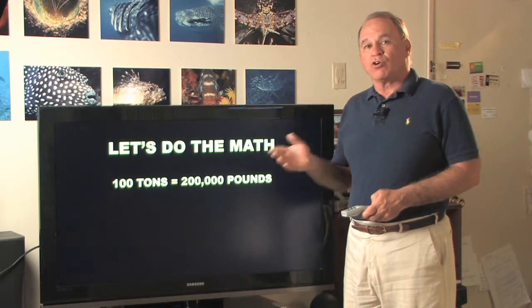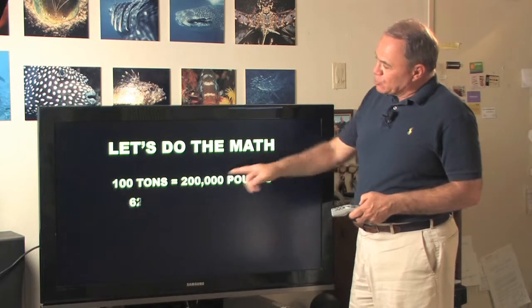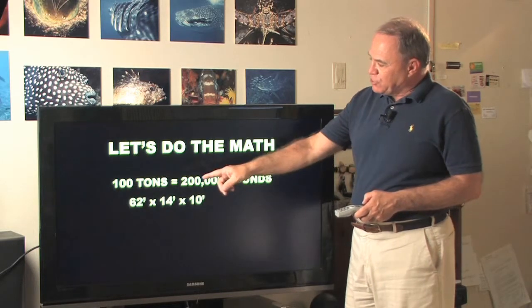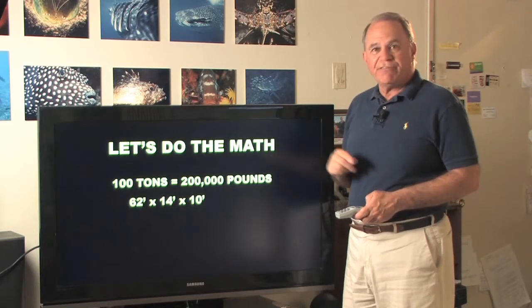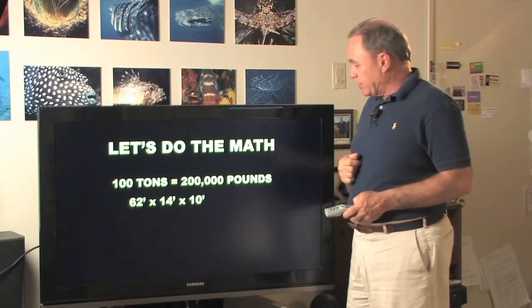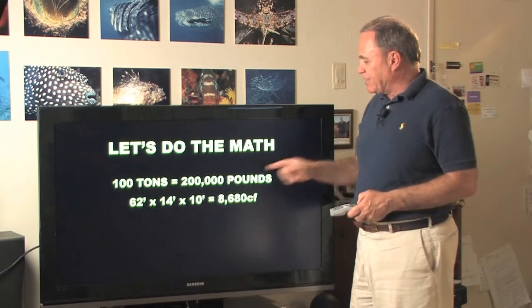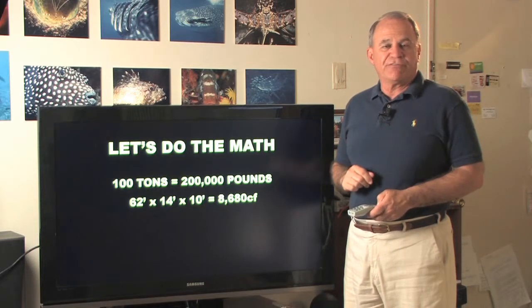Now we need to know how much water is displaced by the hull. So if we know the dimensions of the hull, 62 feet long, 14 feet wide, 10 feet high, by multiplying those together, we get the volume of the hull at 8,680 cubic feet.